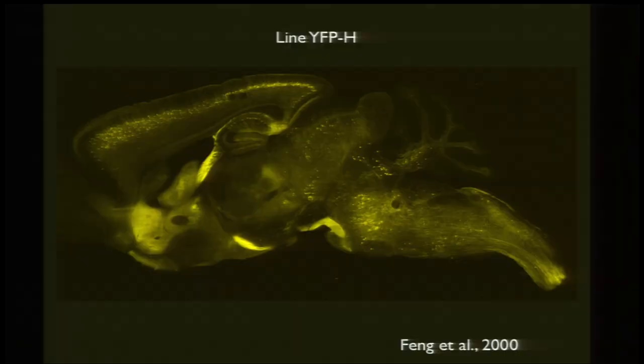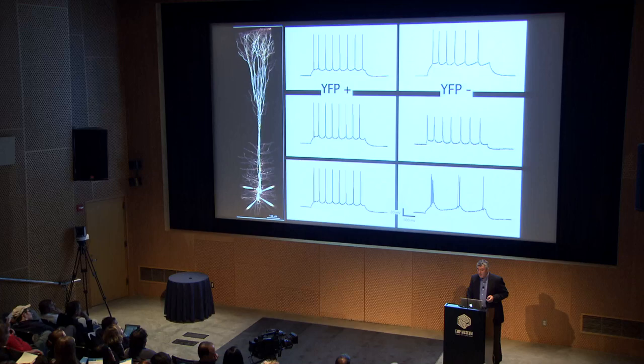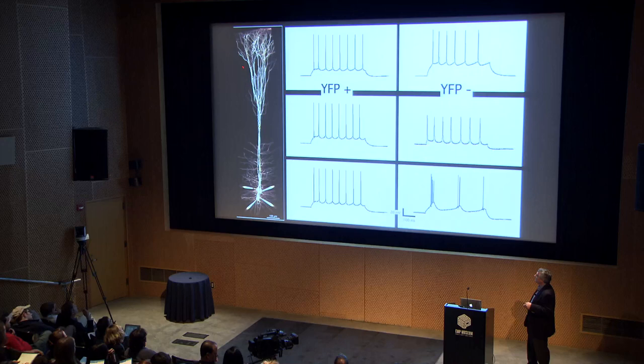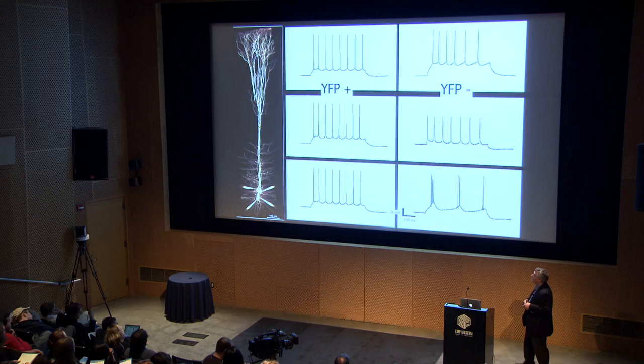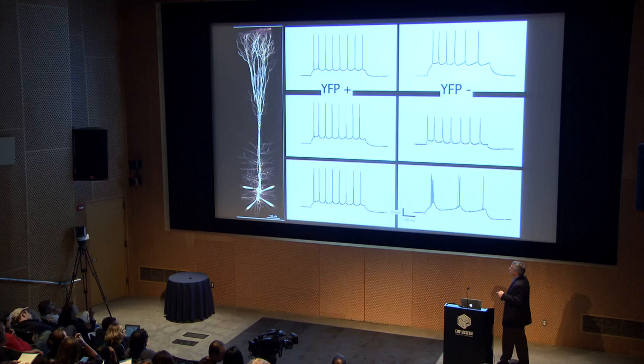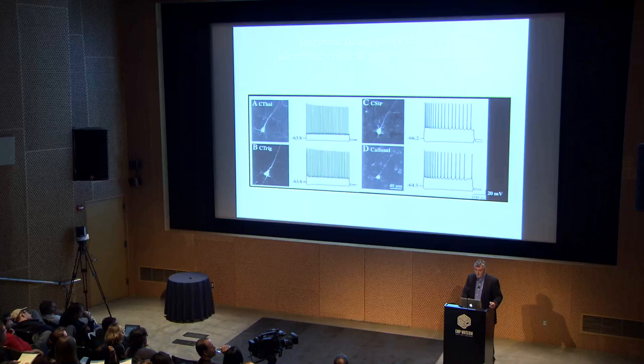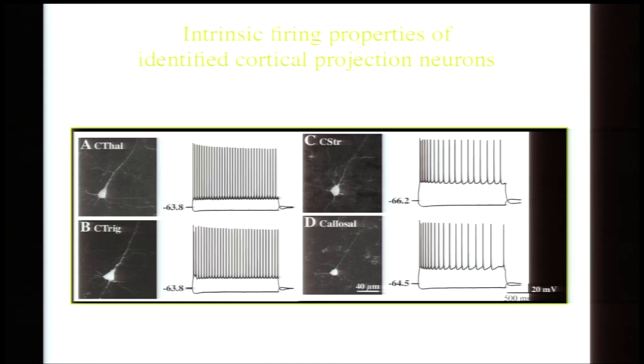We started for pyramidal neurons with the YFPH line developed by Josh Zanes, in which a yellow fluorescent protein is expressed in many cell types throughout the nervous system. But in the neocortex, it's expressed in so-called thick-tufted layer 5 neurons — neurons we'd known from studying in the rat — that have the same firing type when recorded from in slices in mouse, and are quite distinct from cells sitting right next to them in layer 5 that have other morphological features.